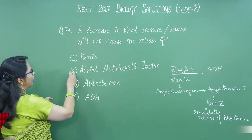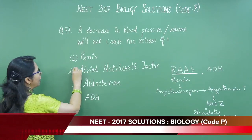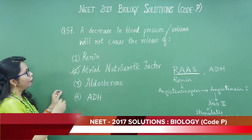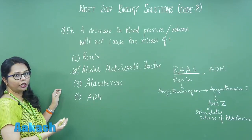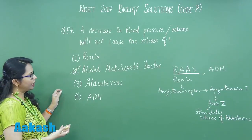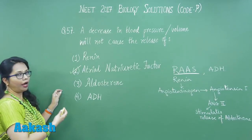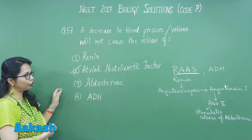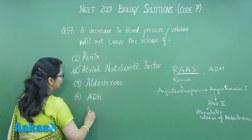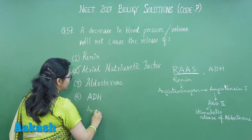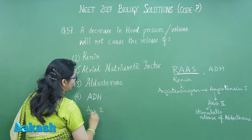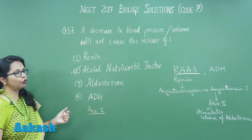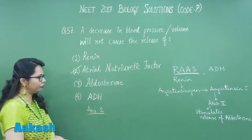So here the answer would be ANF, which is rather causing vasodilation and it is opposing the effect of RAS and ADH. So here our answer is 2. Let us move on to question 58.